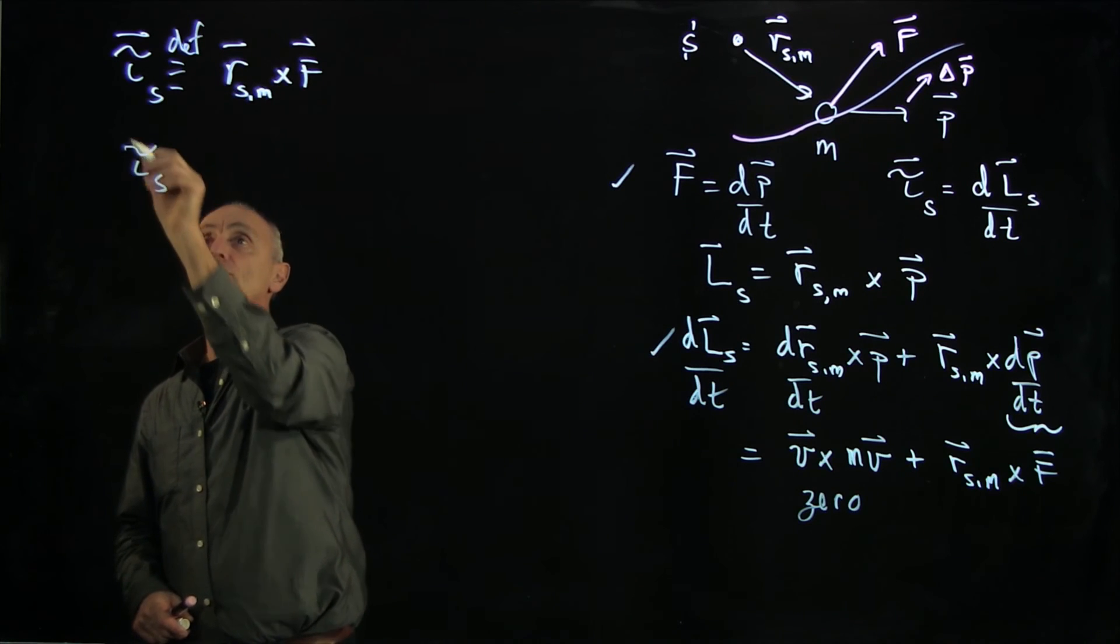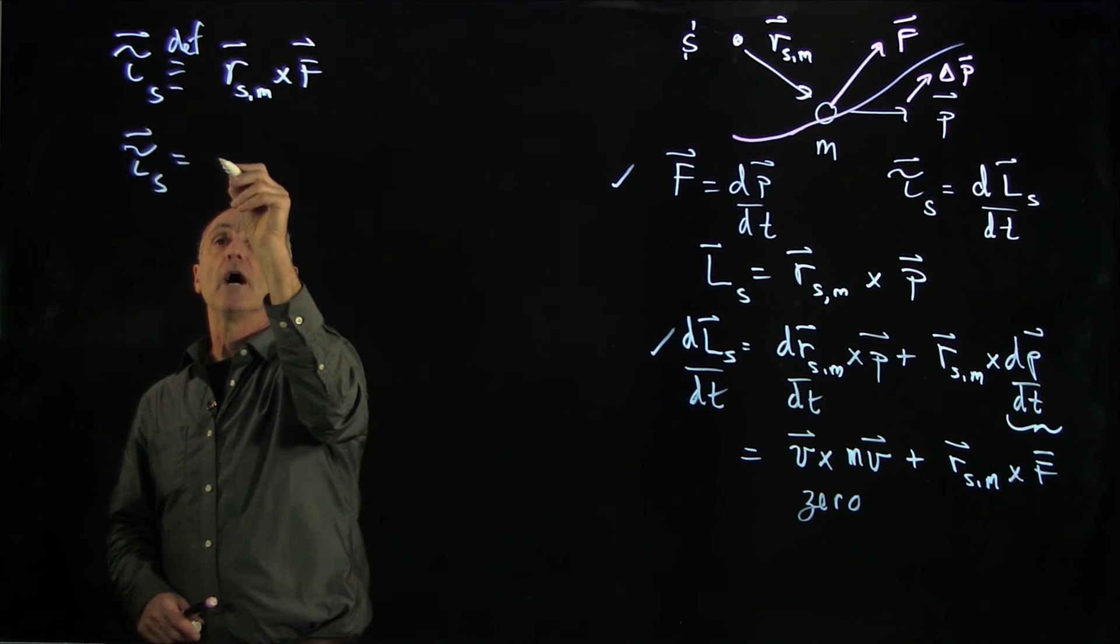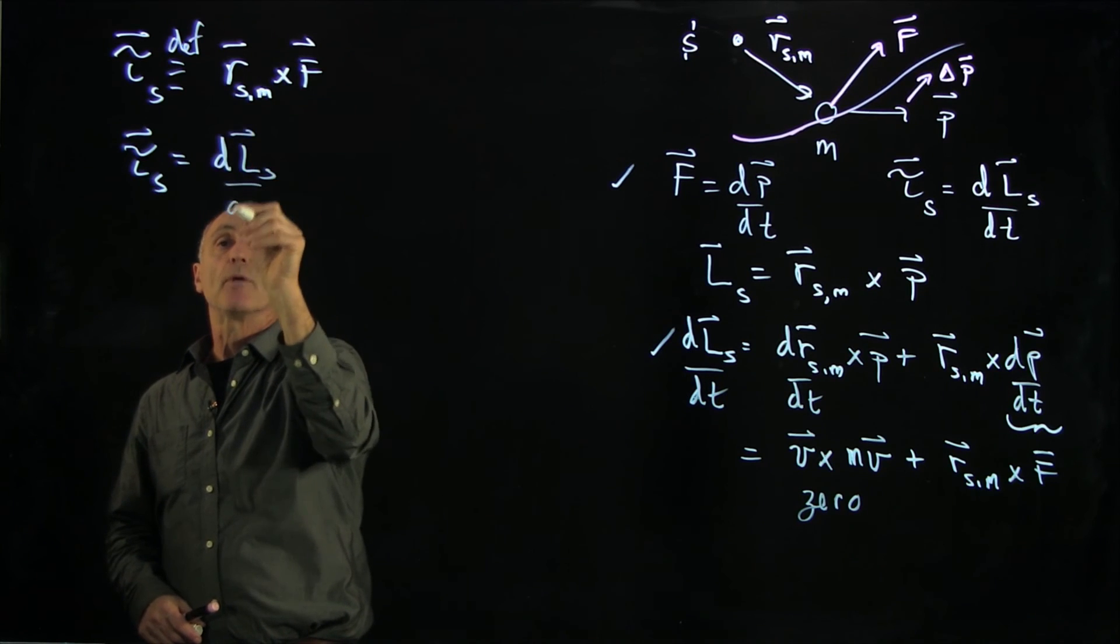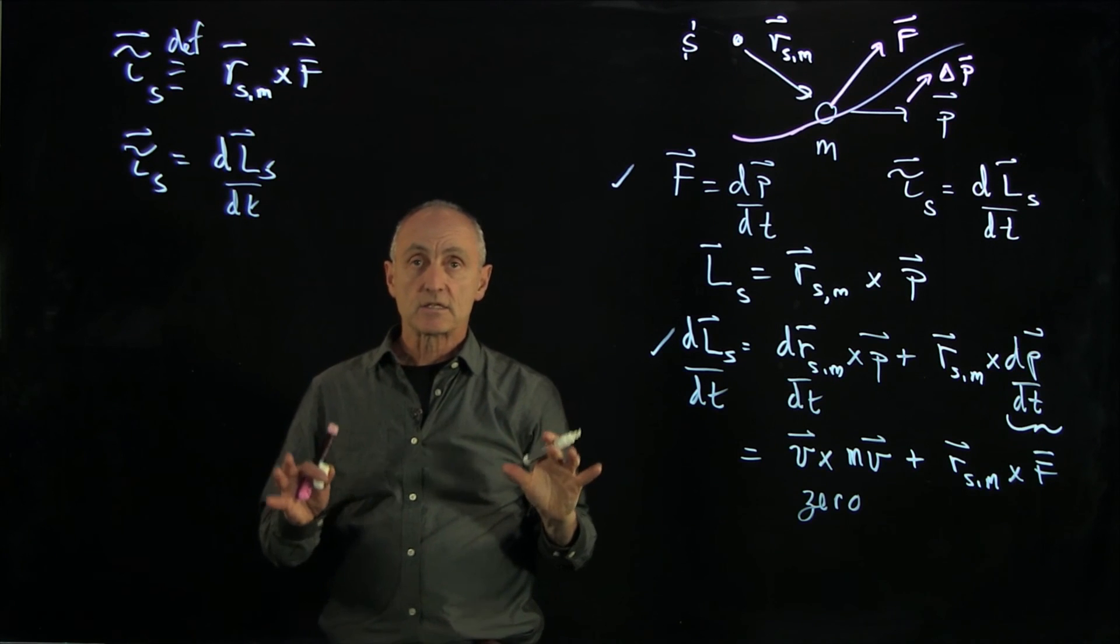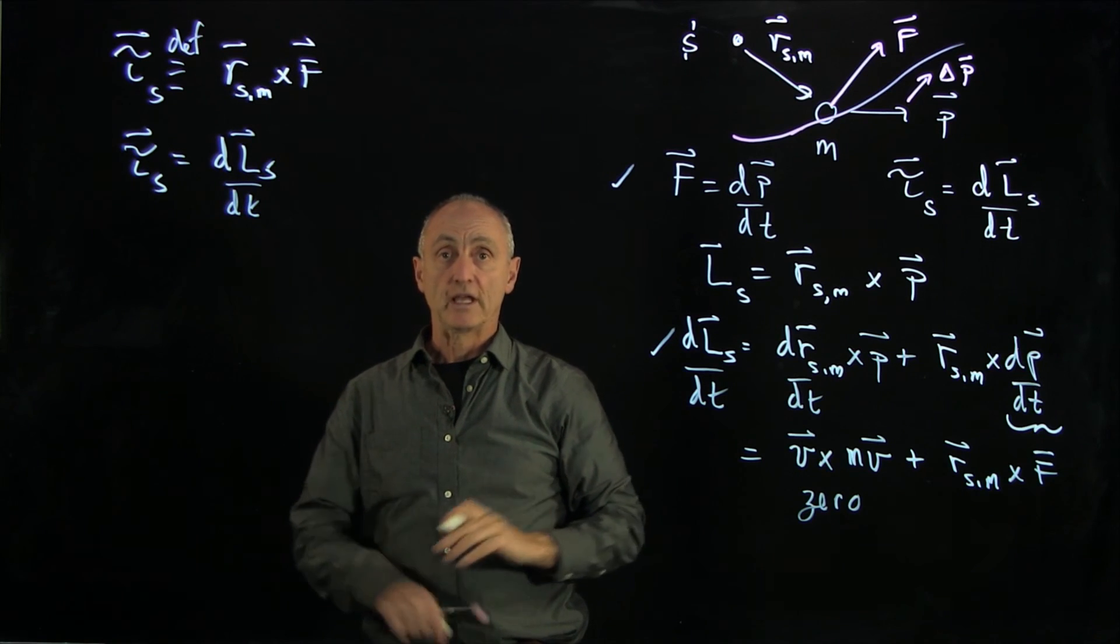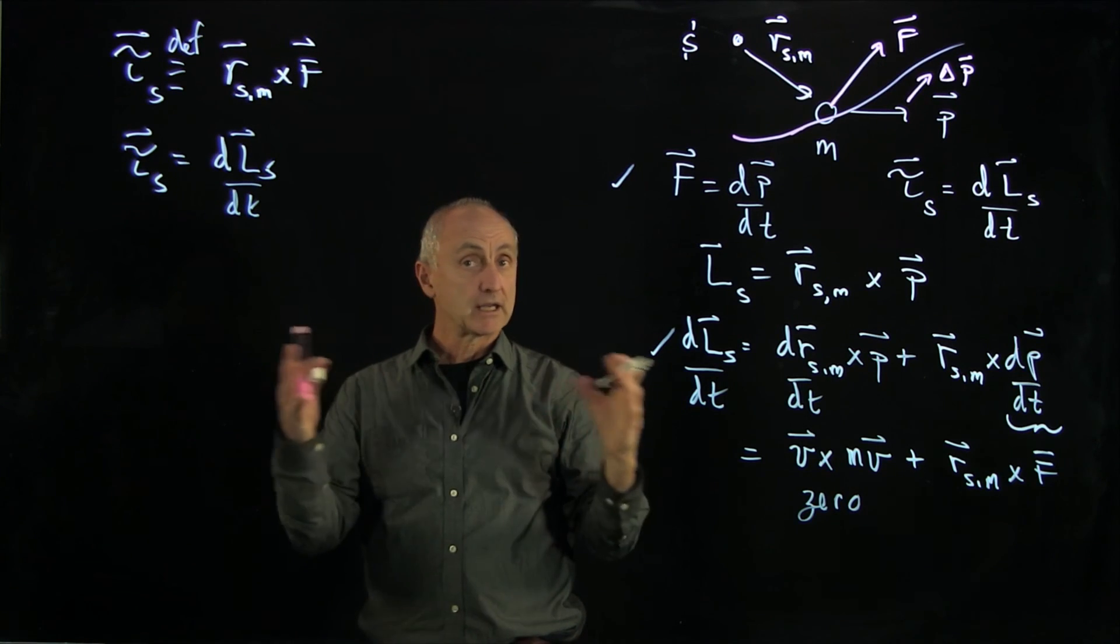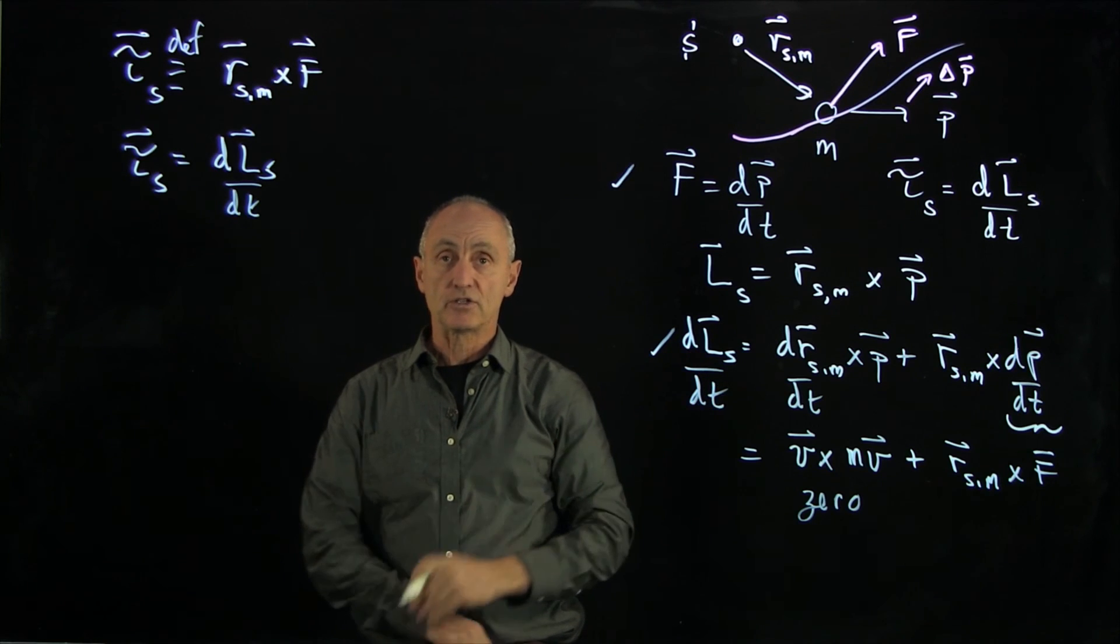And so for a single particle, the torque about a point s causes the angular momentum about that point to change. And this result will generalize for a collection of particles in a calculation that's very similar.